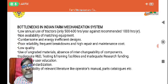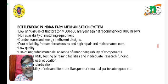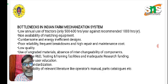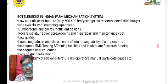Regarding bottlenecks in the Indian farm mechanization system: low annual use of tractors — when a farmer holds his own tractor, it is used only 500 to 600 hours per year against the recommendation of 1000 hours per year. Non-availability of matching equipment, cumbersome and energy-inefficient design, poor reliability, frequent breakdown, and high repair and maintenance cost are also bottlenecks.